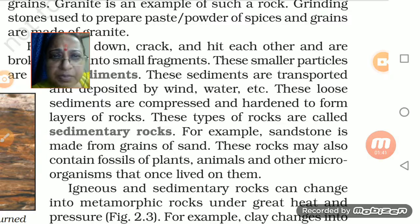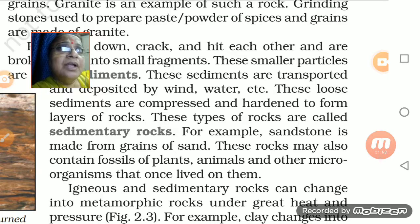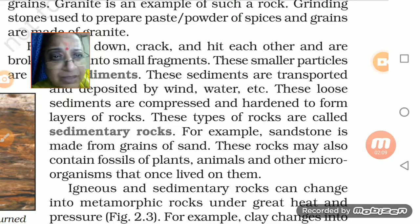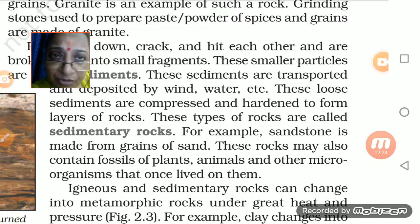Sandstone is made from grains of sand. These rocks contain fossils — plants, animals, and other micro-organisms that once lived on them are embedded in that rock. With thousands and thousands of years, these kinds of rocks get converted into fossil fuel.